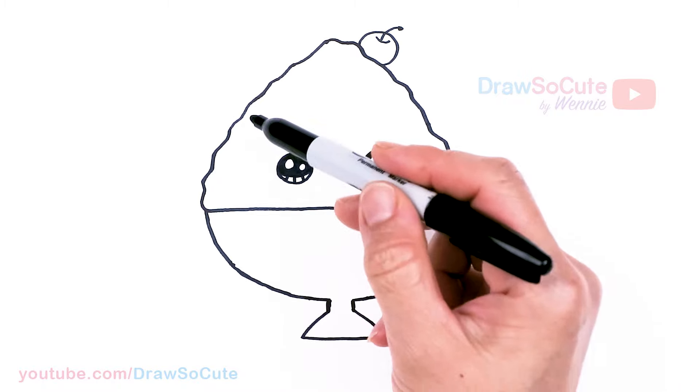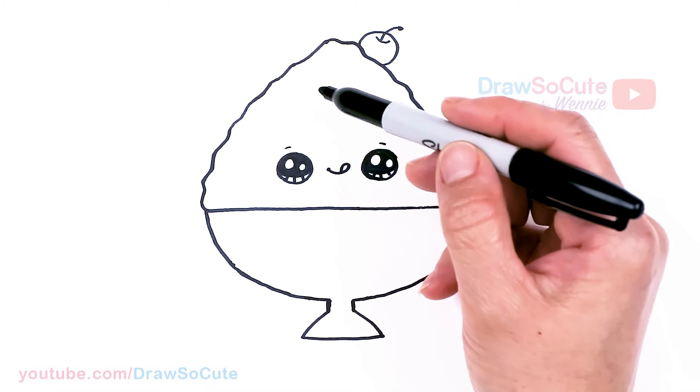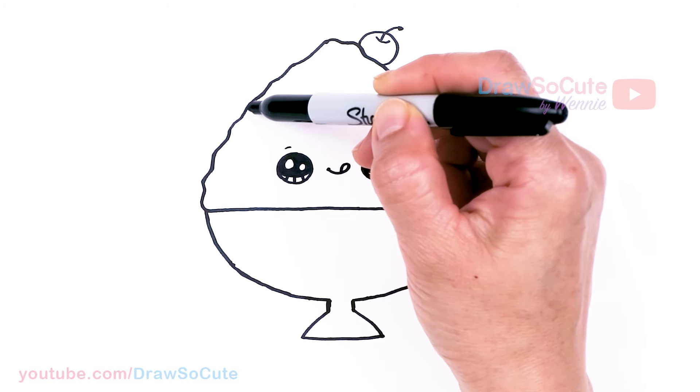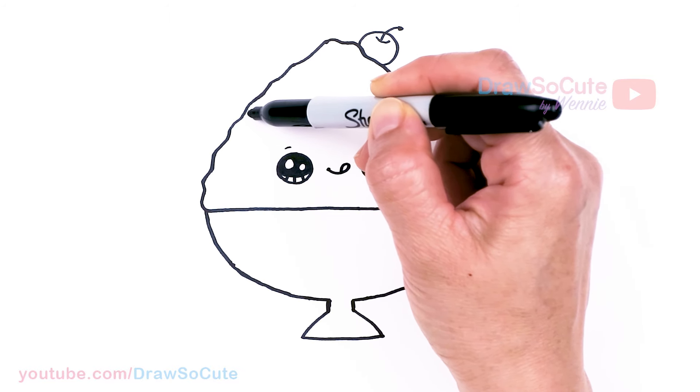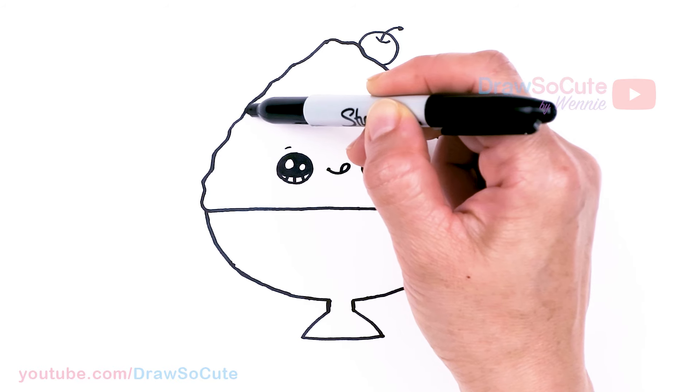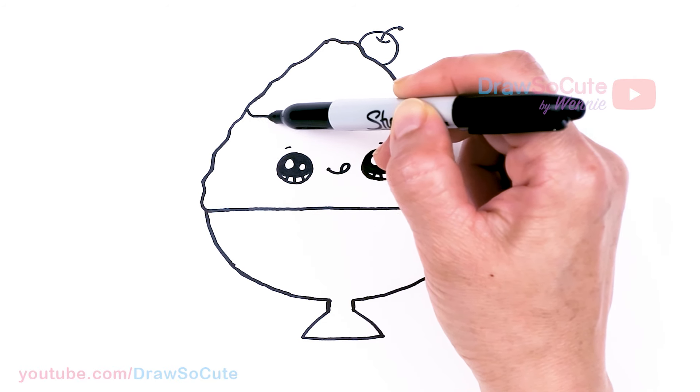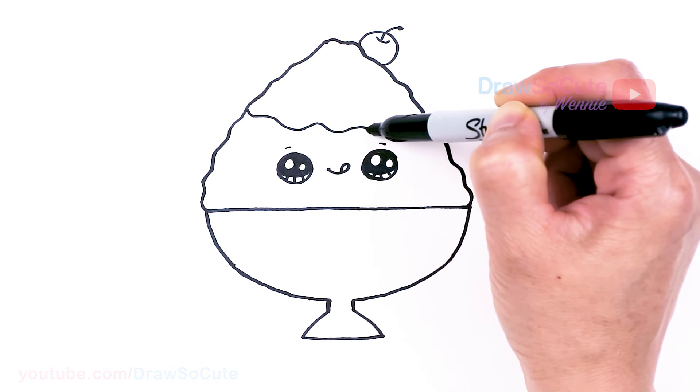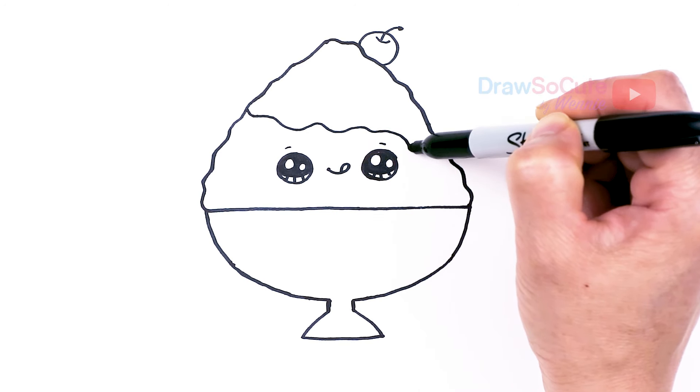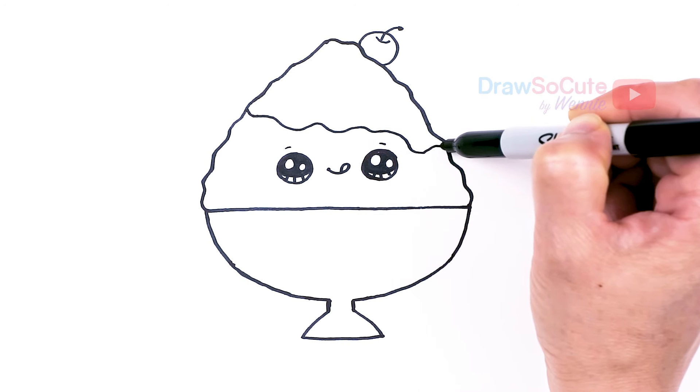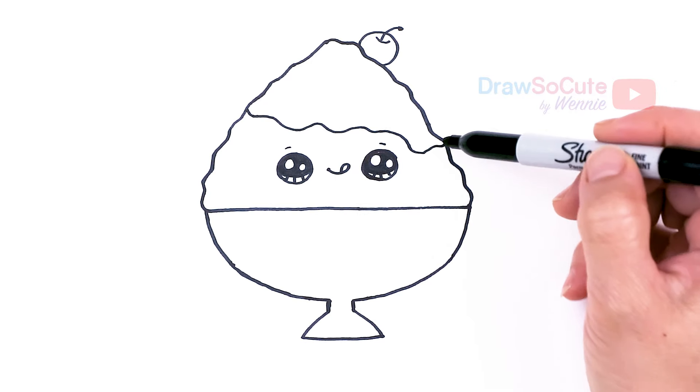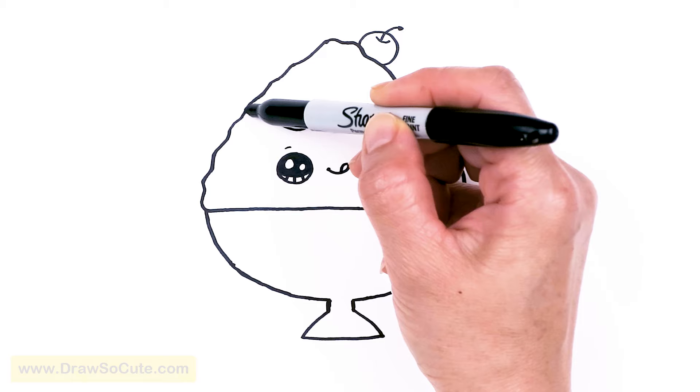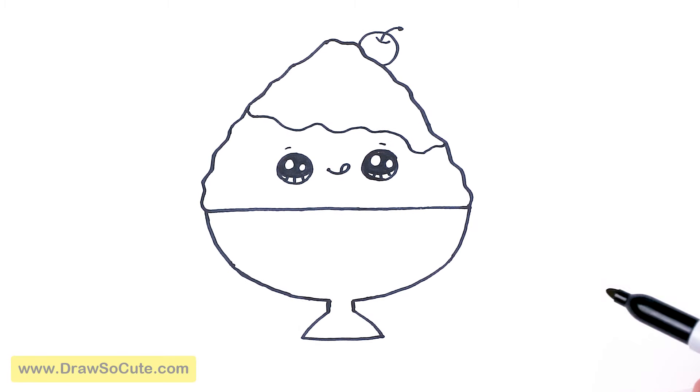Then from there, I'm just going to separate the shaved ice right here to give it some more detail. Let's say about right here, I'm just going to kind of wobble my way across. That way it doesn't look so empty. And of course, when you're coloring it, it's all up to you how you want to decorate your shaved ice. I'm just going to go something like that, just kind of slant it down.